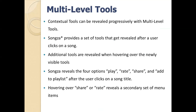The fourth type is multi-level tool. Tools are revealed progressively with multiple levels. An example is a songs app that helps you play songs. There are options like play, add items to the playlist, rate the app, and share songs. These options are revealed only when you click on a particular song.